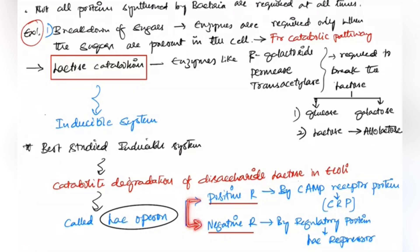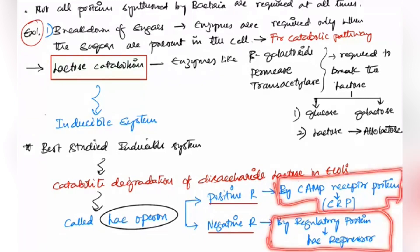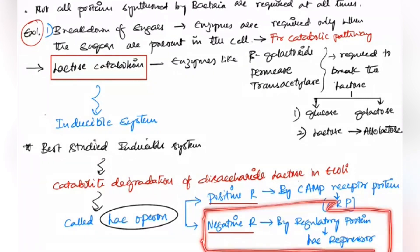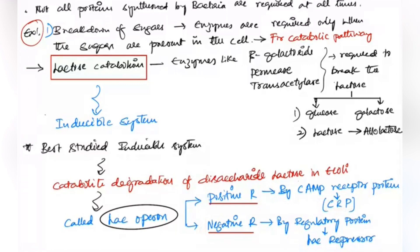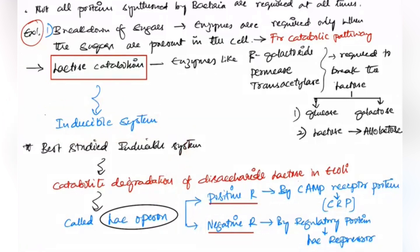The lac operon has two types of regulation: negative regulation by the lac repressor protein, and positive regulation by cAMP-mediated receptor protein. Today we will discuss the negative regulation in detail. The lac operon is an inducible system.